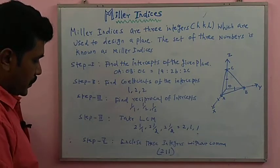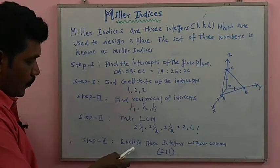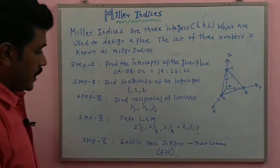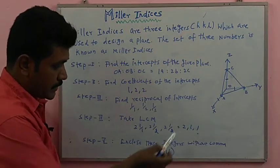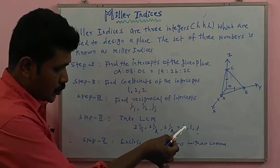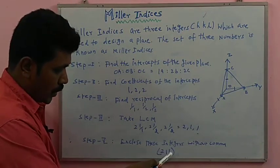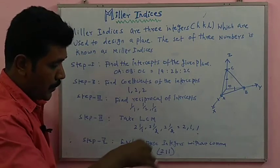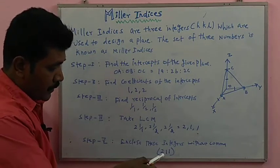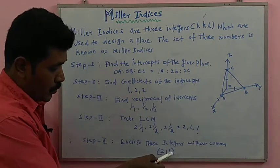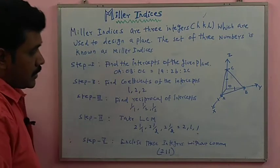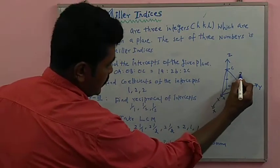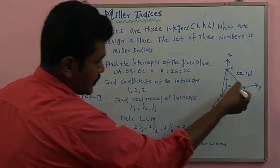Step five: enclose these integers without a comma. The Miller indices are written as (2 1 1) — open bracket, the numbers 2, 1, 1, close bracket, without commas. This represents the plane structure for (2 1 1).